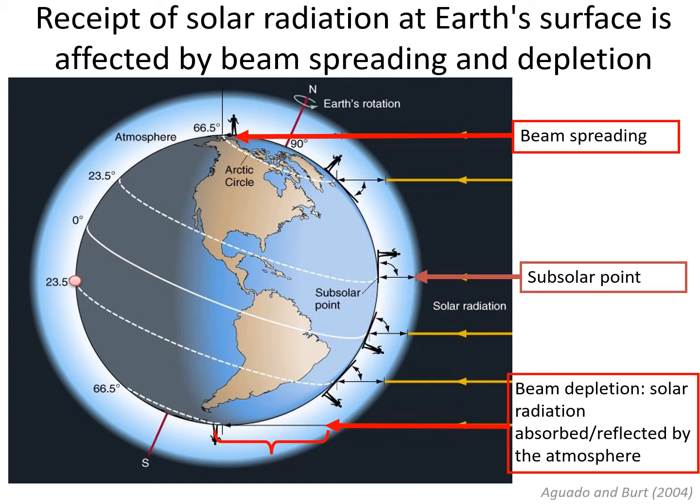The average energy received by the Earth is 341 watts per meter squared. However, three factors result in the equator receiving more energy than the poles. These factors include that the Earth is tilted, beam spreading, and beam depletion.